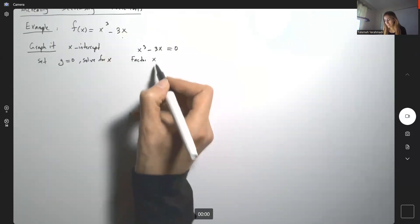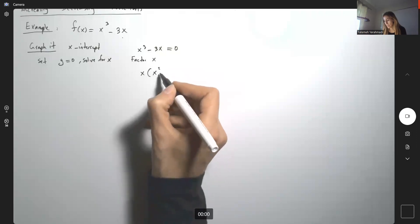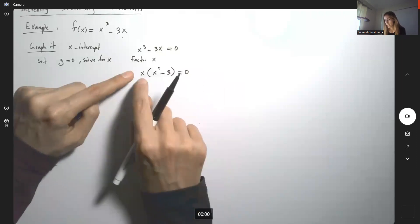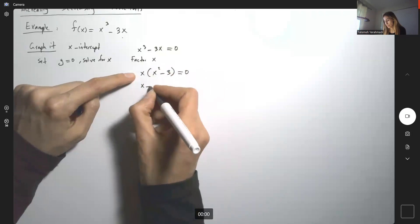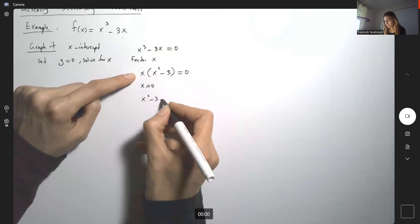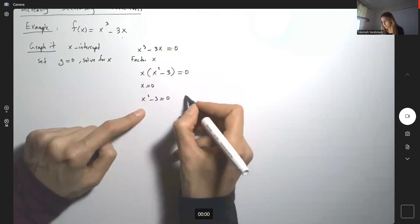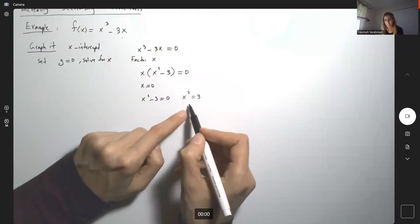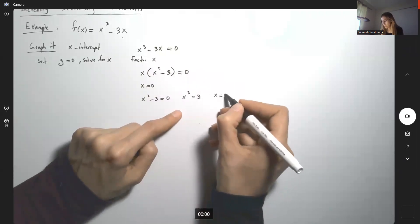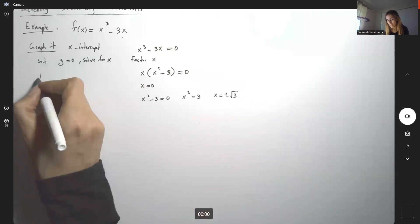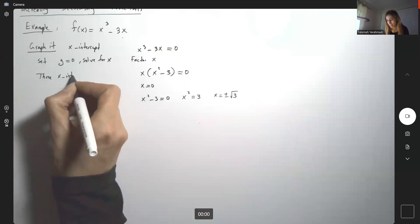Factor out x, so you have x(x² - 3) = 0. When this equals 0, it means x = 0 or x² - 3 = 0. x² - 3 = 0 means x² = 3, so x = ±√3. We end up having three x-intercepts.